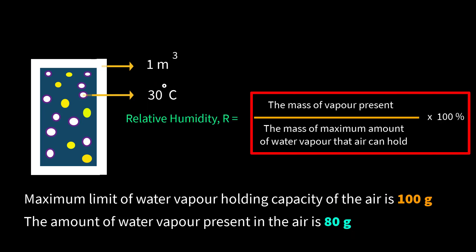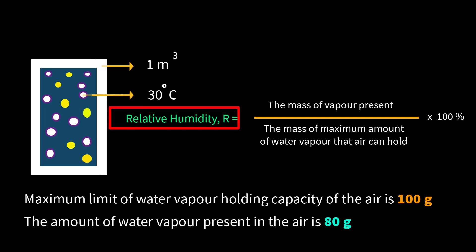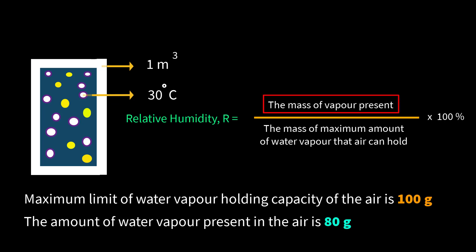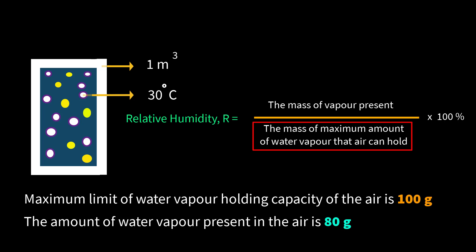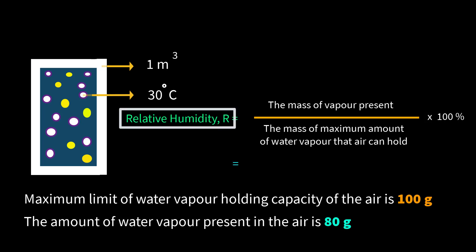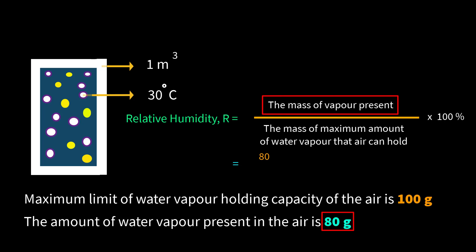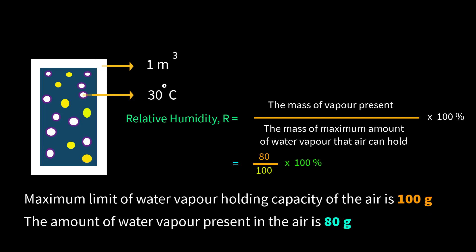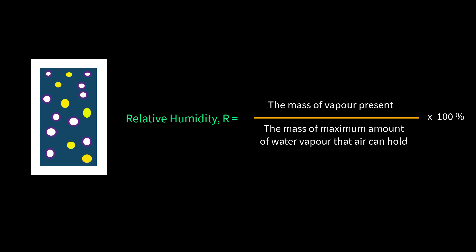By using the mass of water vapor we can easily determine relative humidity. The formula is: relative humidity R equals the mass of vapor present over the mass of the maximum amount of water vapor that air can hold, times 100 percent. So R equals 80 over 100 times 100 percent, therefore R equals 80 percent. However, in real life it is very difficult to measure the mass of vapor because of its gaseous state.